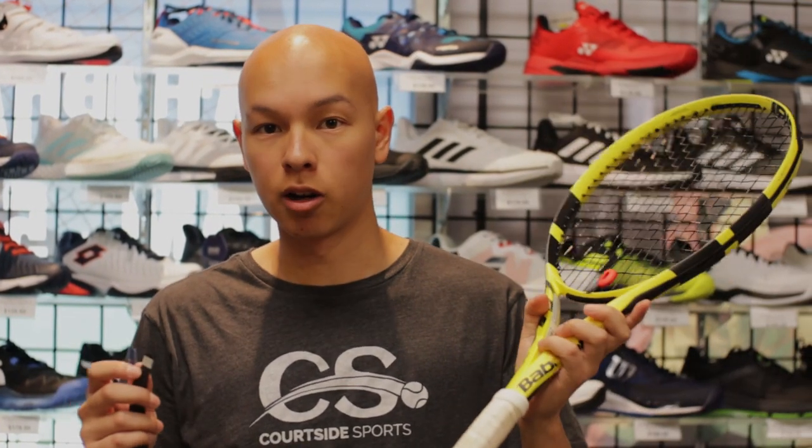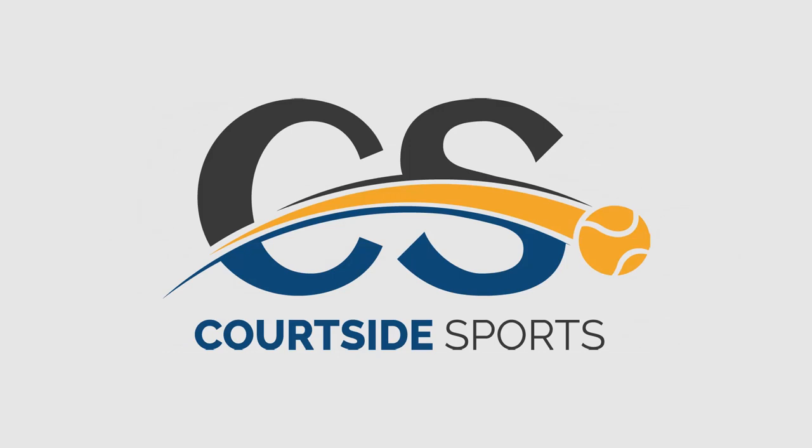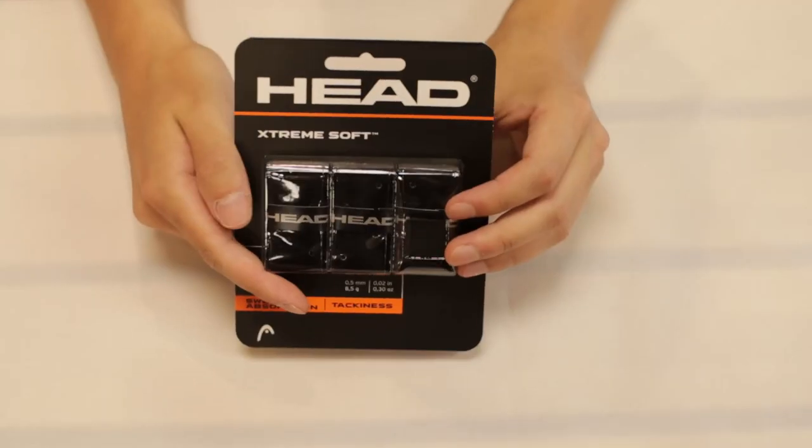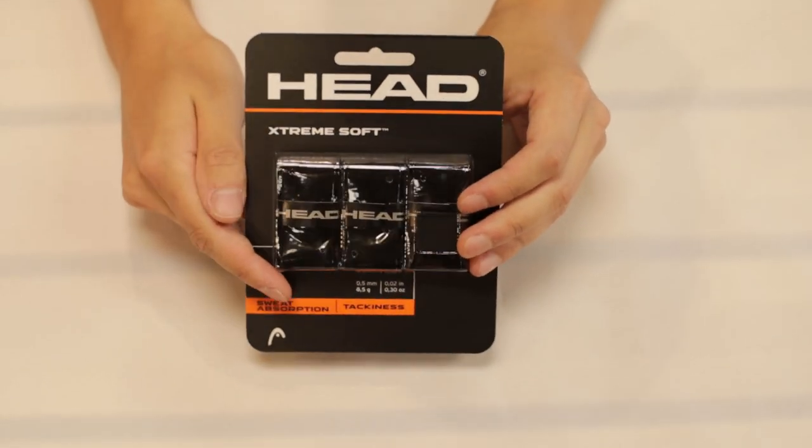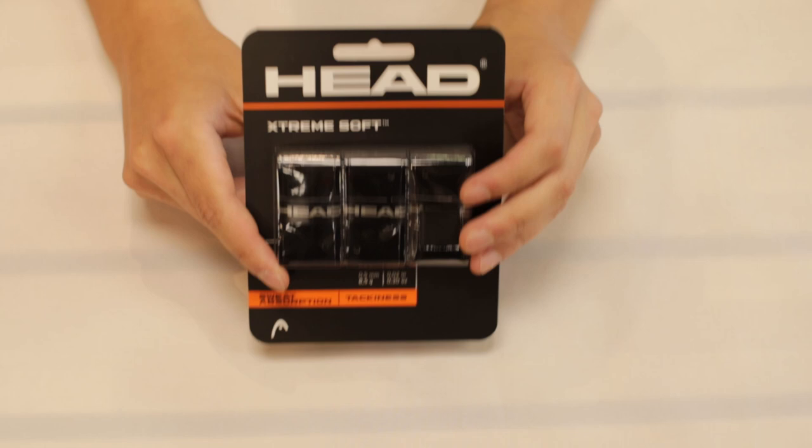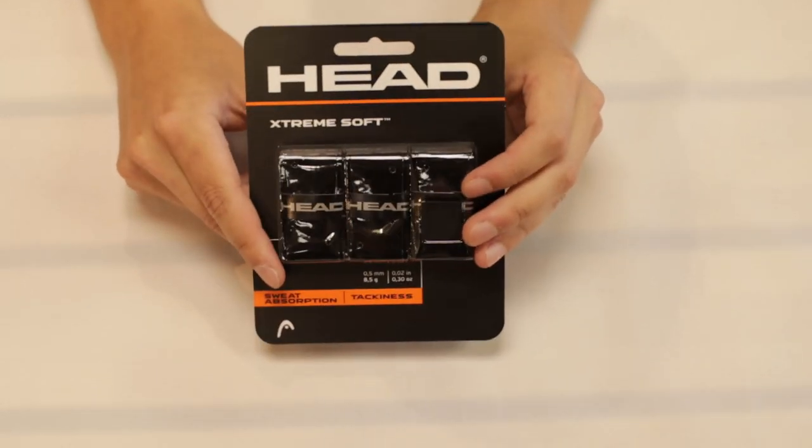Hi I'm Beckett from Courtside Sports and today we're going to be putting on an overgrip. Here we have Head Extreme Soft overgrips. They're some of our most popular overgrips because they're soft, absorbent, and tacky.